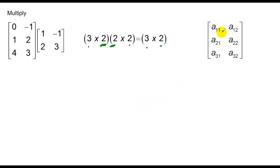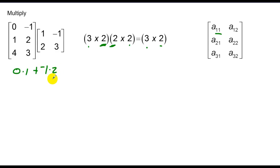All the elements are listed: positions 1,1; 1,2; 2,1; 2,2; 3,1; 3,2. These tell me what to multiply. For element 1,1: I take my first row of matrix A and my first column of B — 0 gets multiplied by 1, and negative 1 gets multiplied by 2. For element 1,2: first row of A and second column of B — 0 gets matched with negative 1, and negative 1 gets matched with 3.